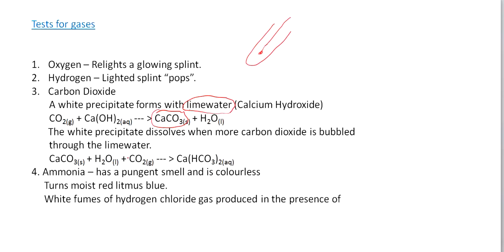If we continue to bubble carbon dioxide through the solution, the white precipitate dissolves, and what we get is calcium hydrogen carbonate. These are typical examination questions. When CO2 is bubbled through calcium hydroxide, you initially get a white precipitate of calcium carbonate; if more CO2 is bubbled through, the precipitate dissolves. The equation is: CaCO3 + H2O + CO2 → Ca(HCO3)2.